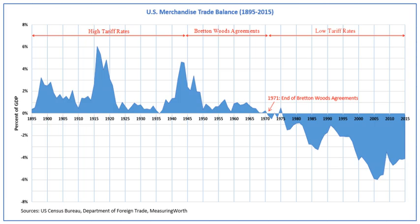Officially established on 27 December 1945, when the 29 participating countries at the conference of Bretton Woods signed its Articles of Agreement, the IMF was to be the keeper of the rules and the main instrument of public international management. The fund commenced its financial operations on 1 March 1947. IMF approval was necessary for any change in exchange rates in excess of 10%. It advised countries on policies affecting the monetary system and lent reserve currencies to nations that had incurred balance of payment debts.